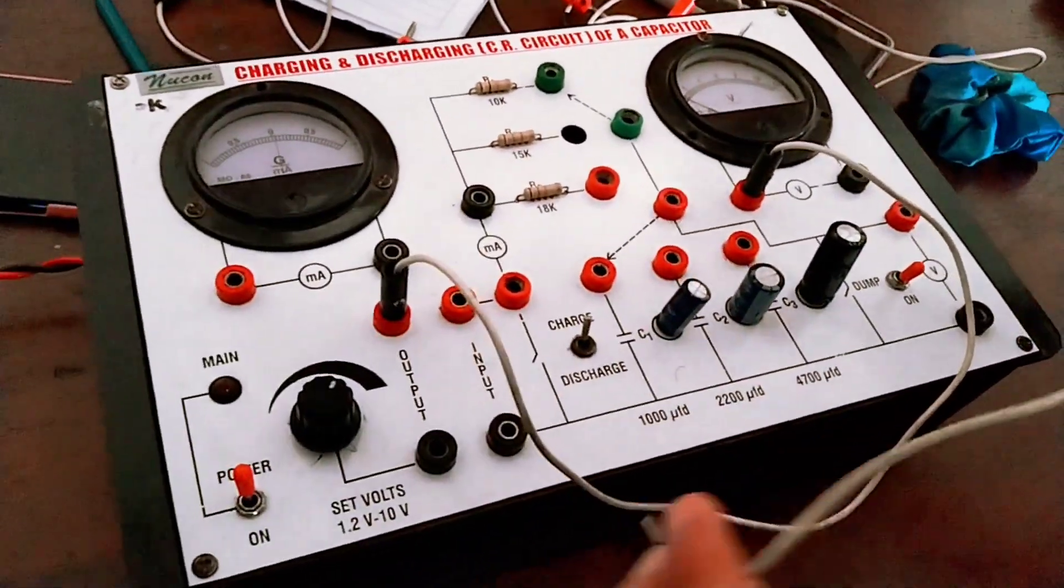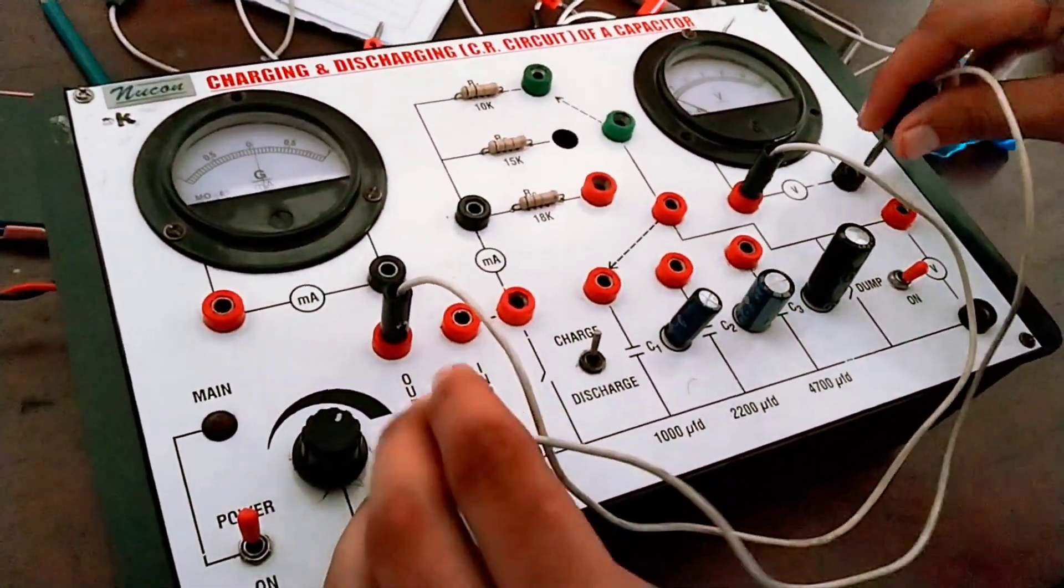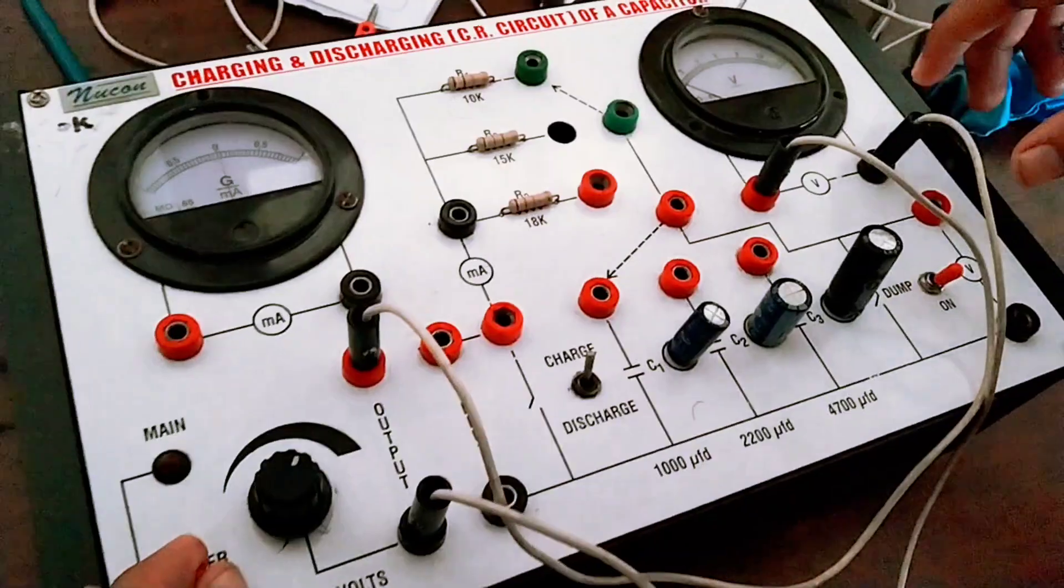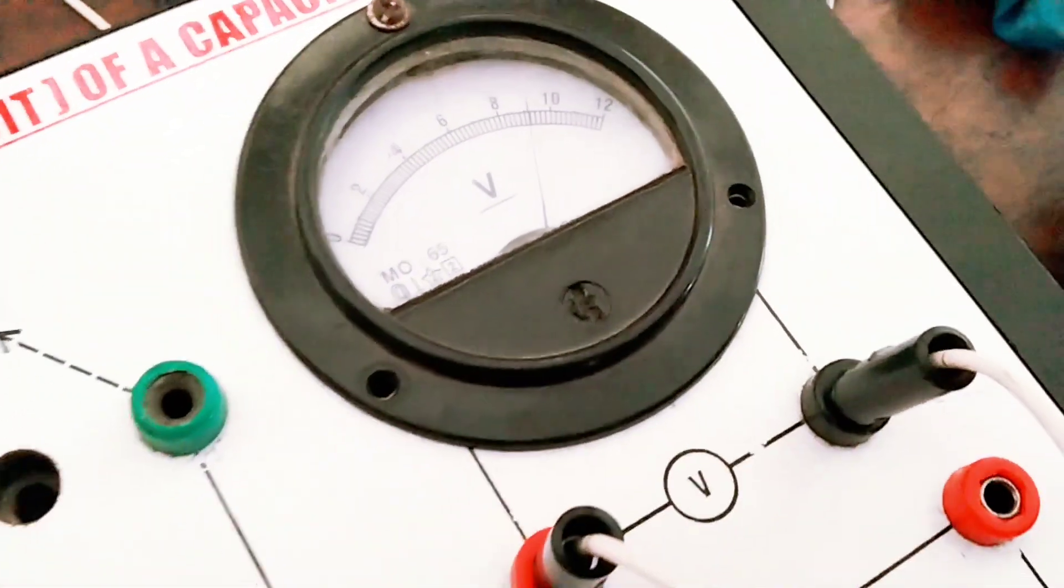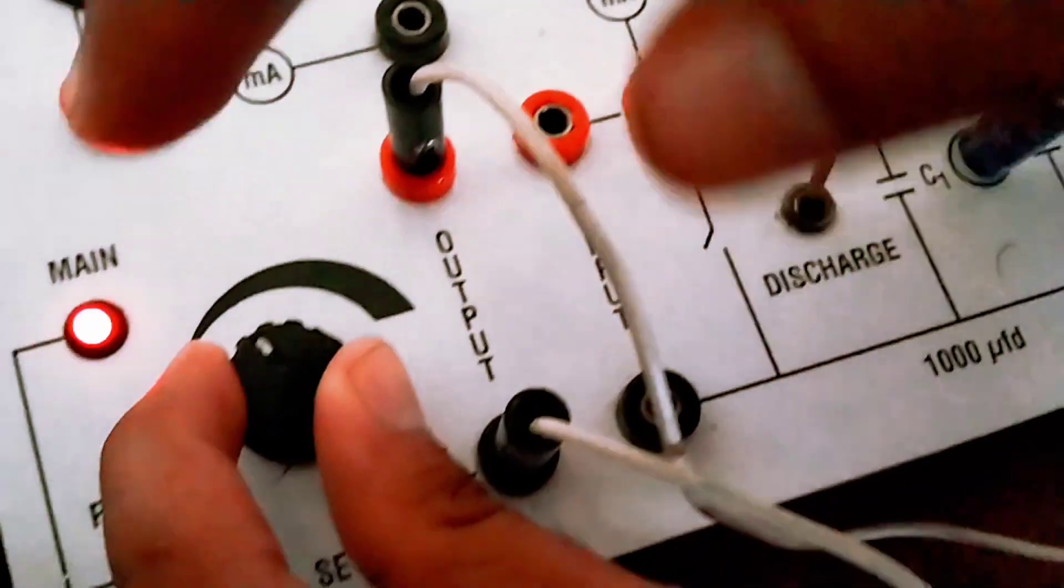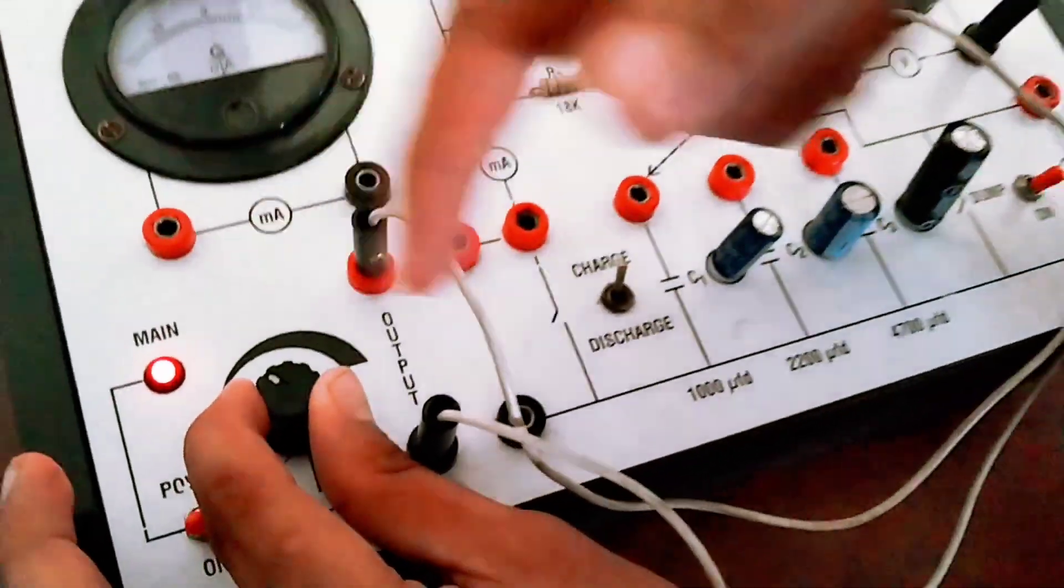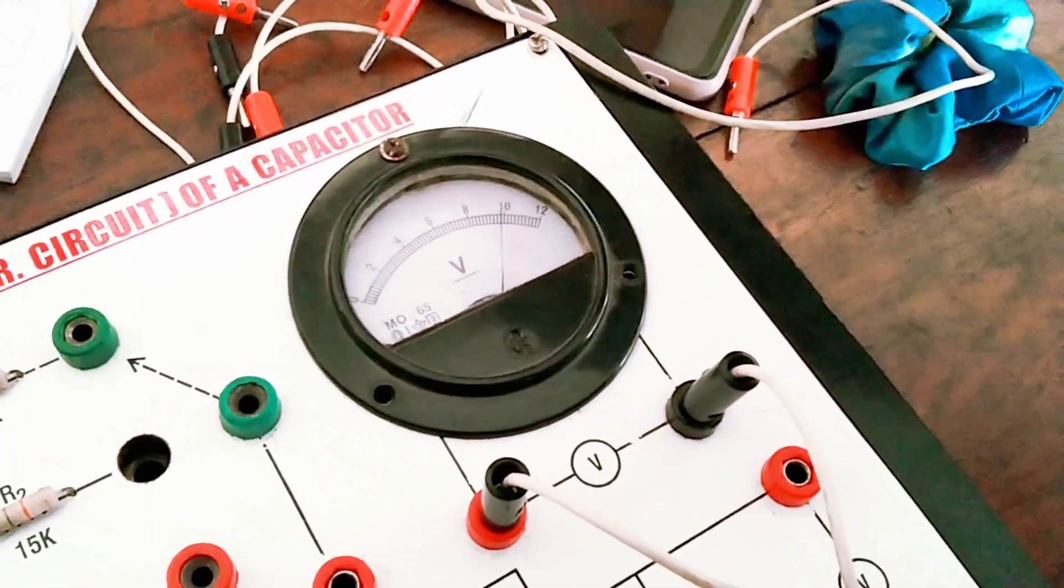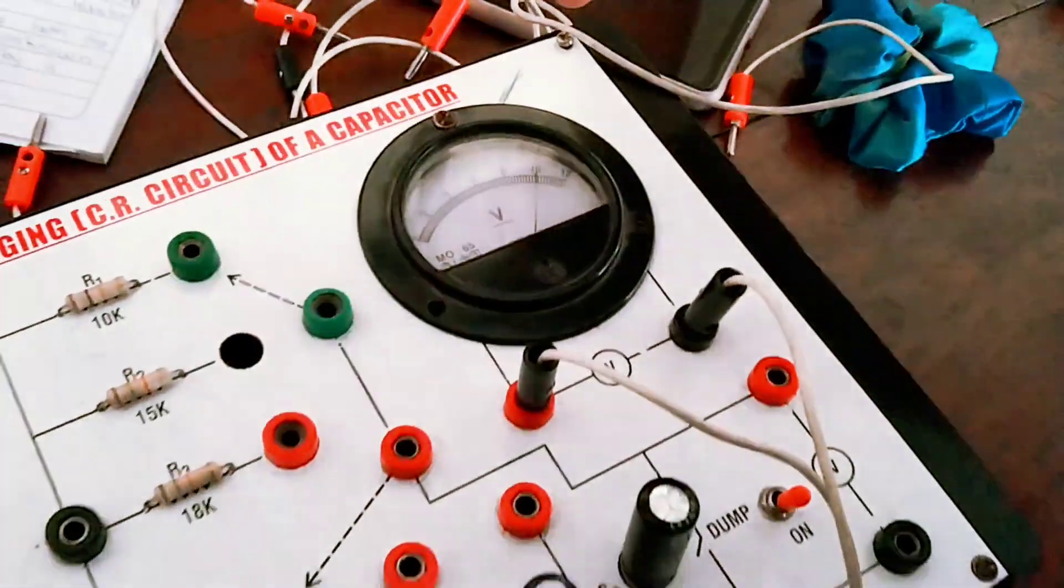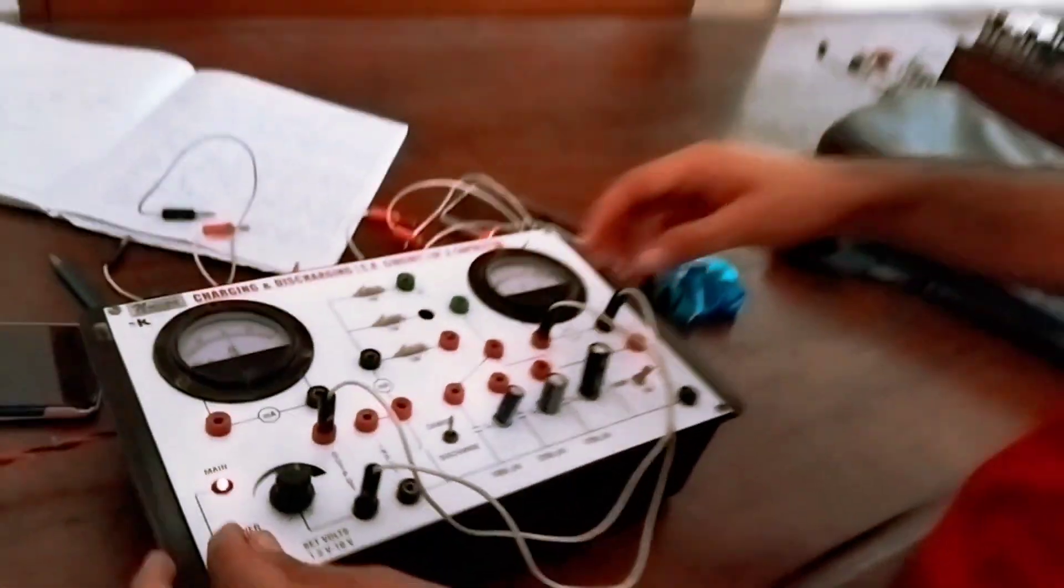For this purpose I make this connection. Now I start the power on and see this - I can manage the voltage by this knob. You can see here this is 8 volt, 9 volt, and 10 volt. So we are giving the voltage to the circuit.